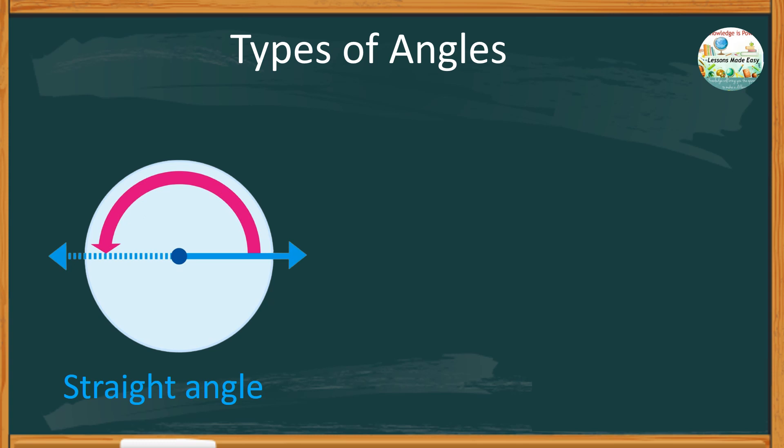But they are different because a straight angle has a vertex, but a straight line has no beginning and no end.